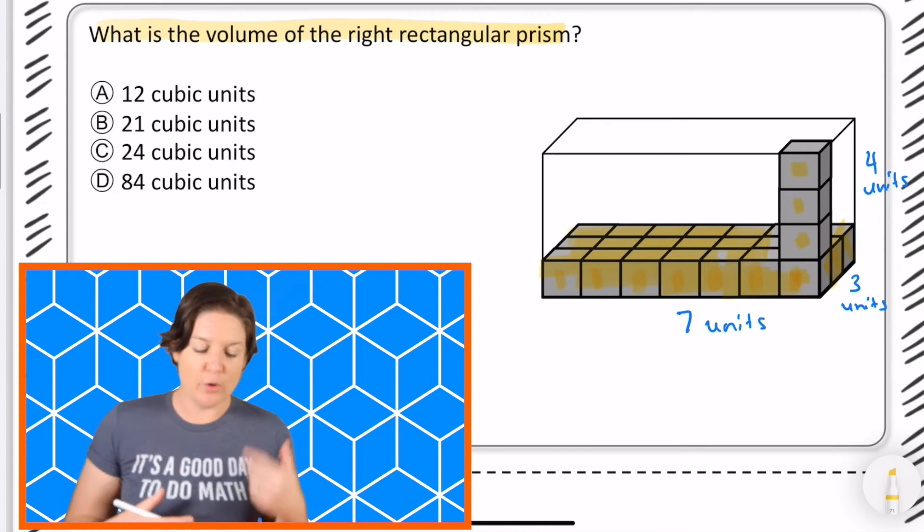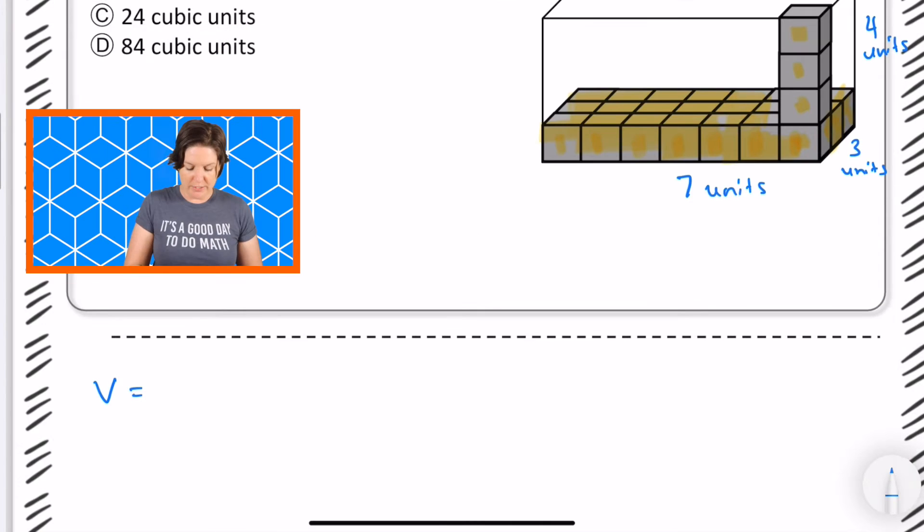So you could have done length times width times height or base times height. Volume equals length times width times height which is the same thing as volume equals the base, because the length times the width equals the base, times the height.